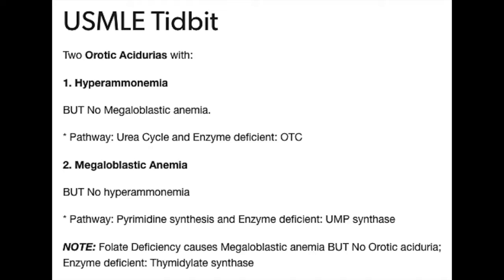Increased orotic acid in the urine is seen in a couple of different diseases. In addition to orotic aciduria, it's also seen in urea cycle defects such as ornithine transcarbamylase deficiency.